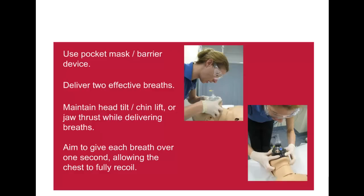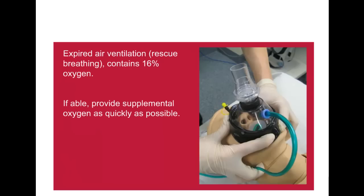Failure to maintain the head tilt, chin lift or jaw thrust is the most common cause of obstruction during resuscitation. You should aim to give each breath over one second, allowing the chest to fully recoil before the next breath is given. Rescue breathing has an oxygen concentration of 16%. In the absence of data indicating the optimal saturation of arterial oxygenation during CPR, if able, ventilate the lungs with 100% oxygen until the return of spontaneous circulation.